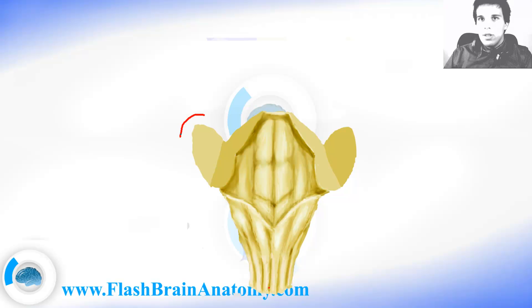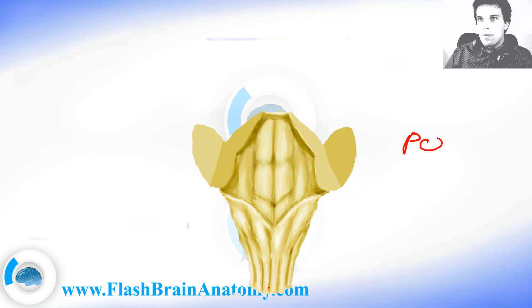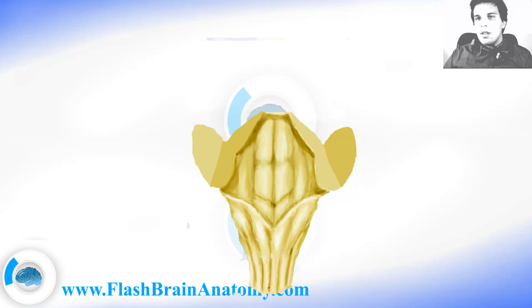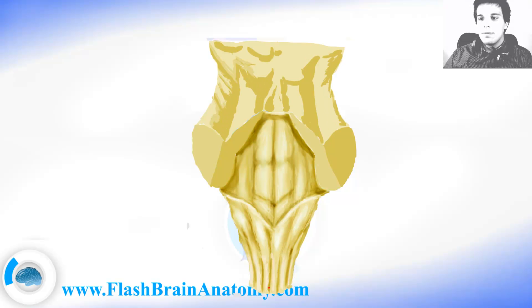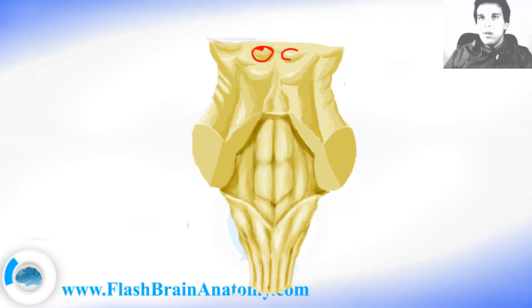This was already the second part of the brainstem, and it's called the pons. So we had the medulla oblongata, now we have the pons, and the third part of the brainstem is the mesencephalon. On the mesencephalon, you can notice the superior colliculi here and the inferior colliculi here.